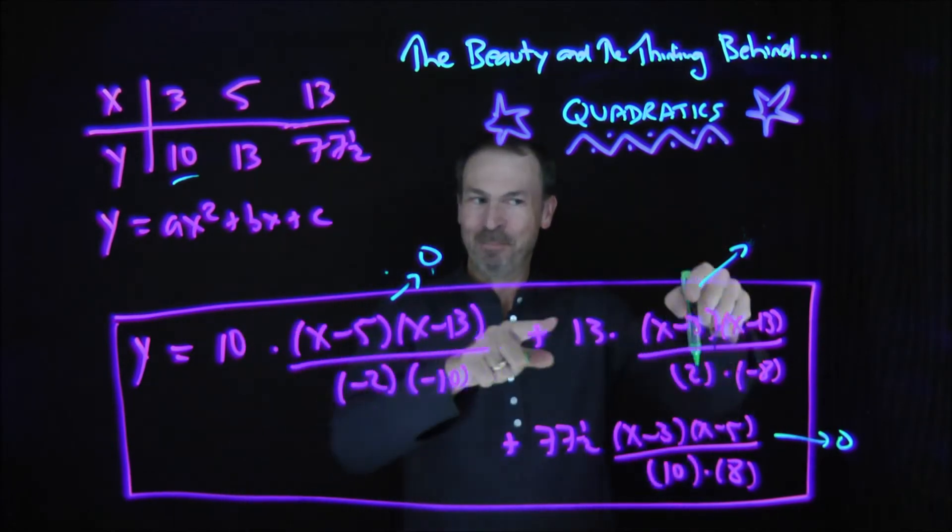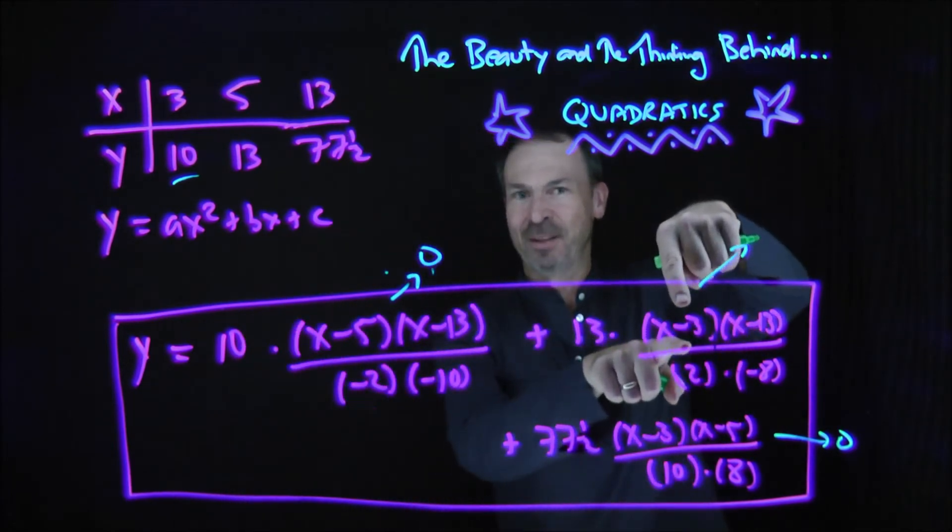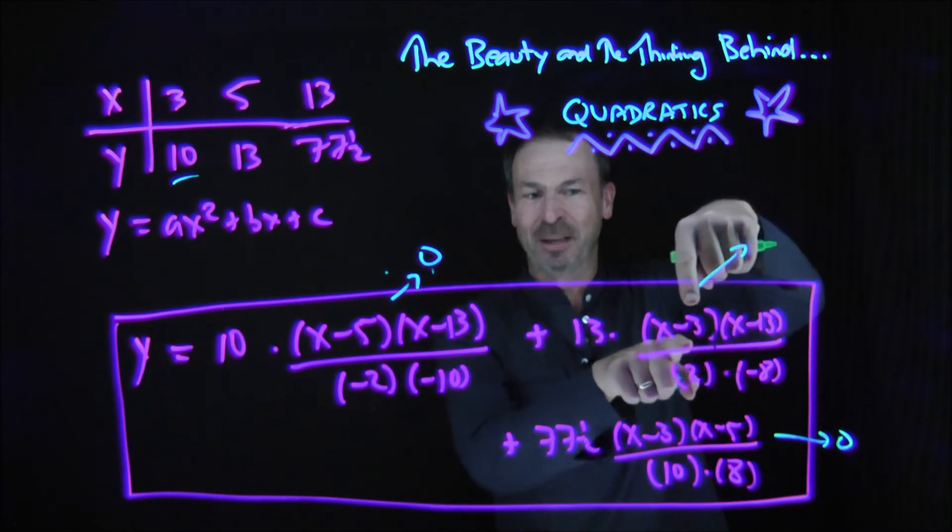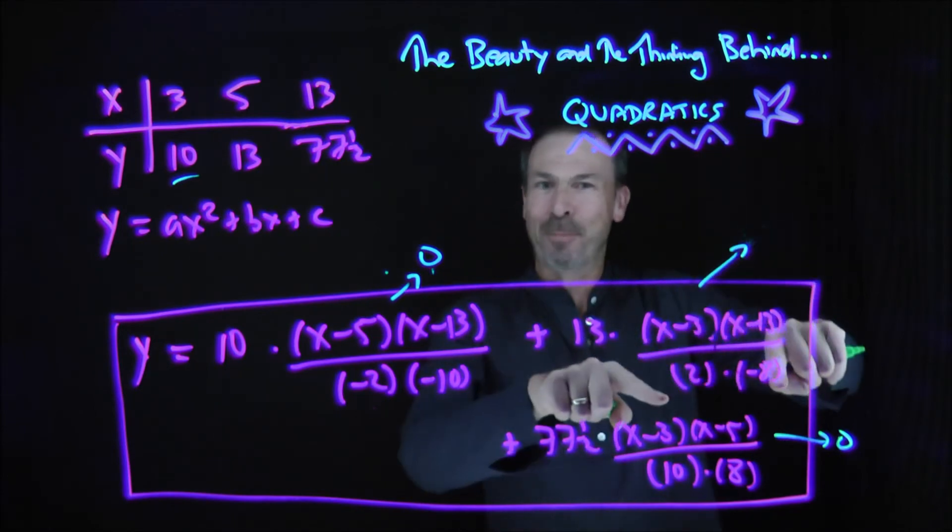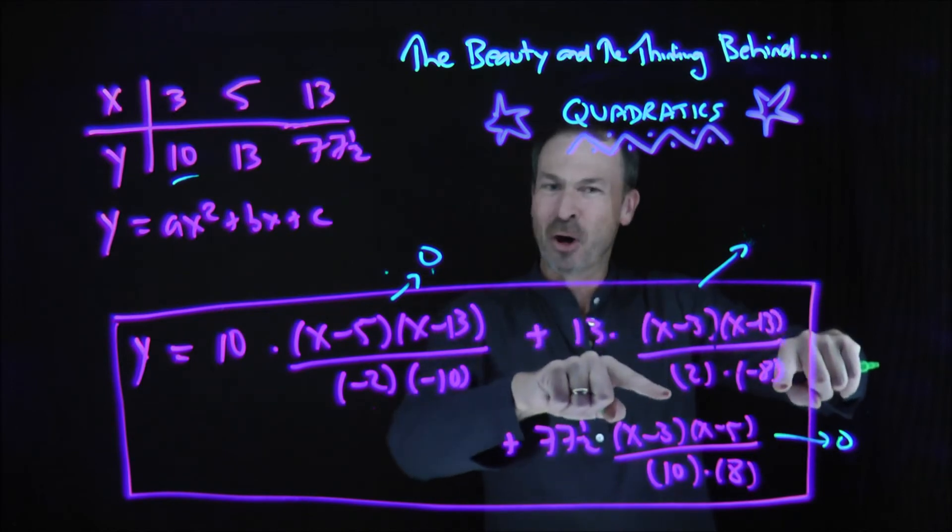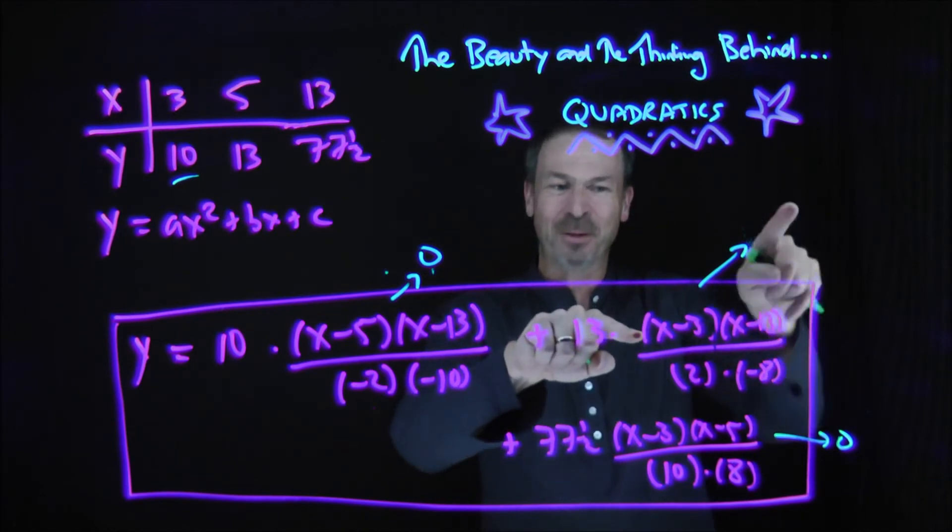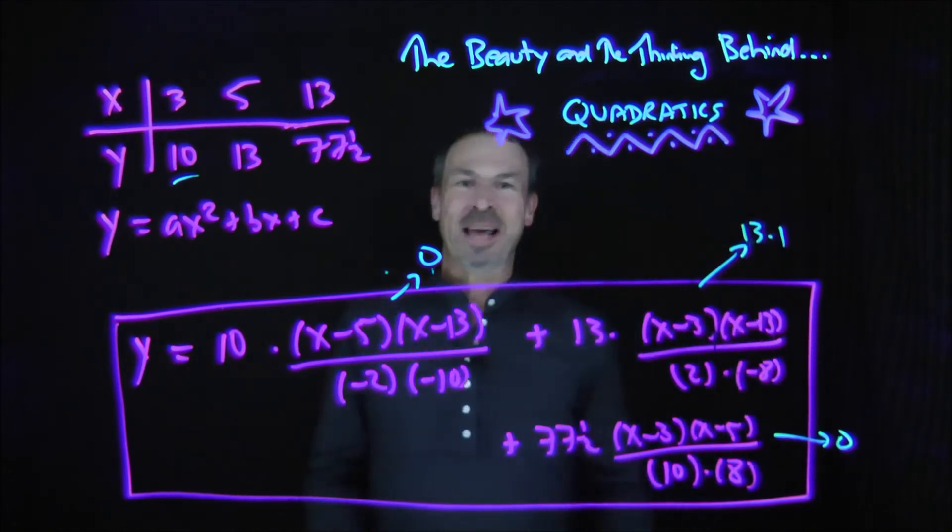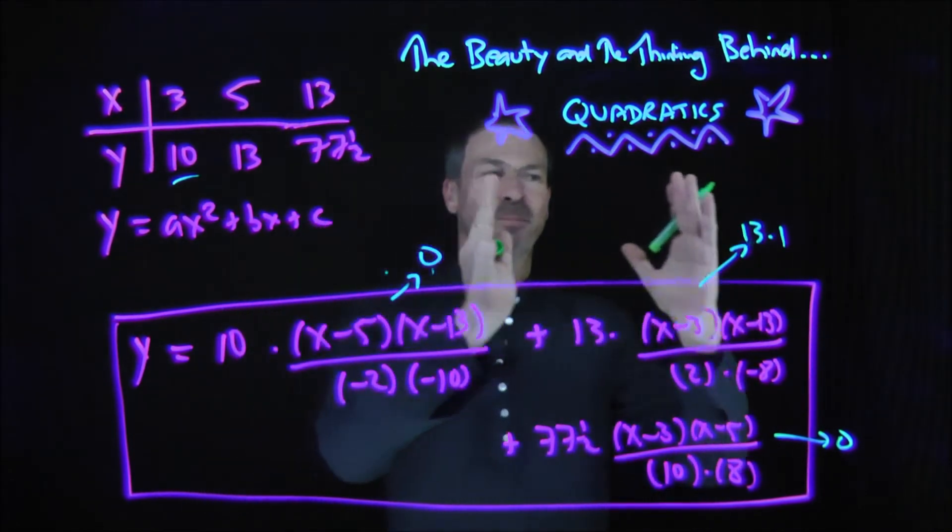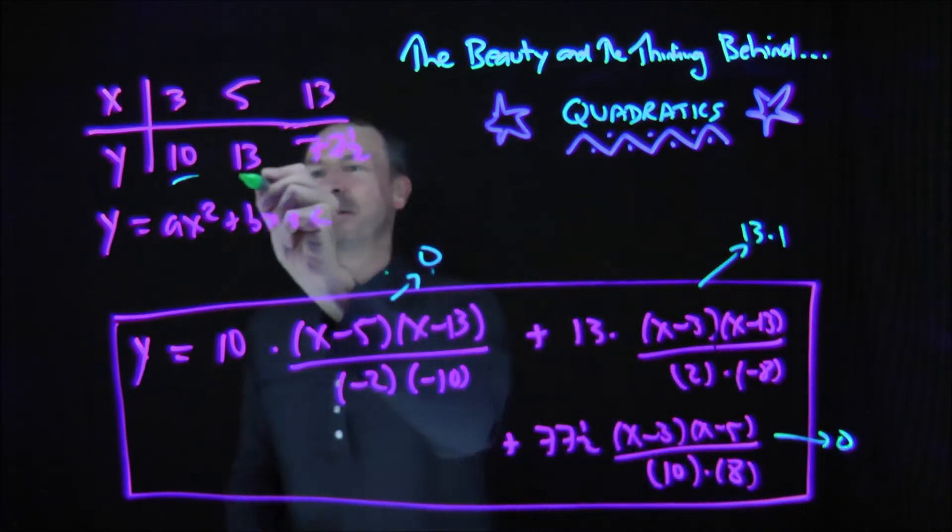And look what I did. I'll have 5 minus 3 on the top times 5 minus 13 on the top. So I'll get, what, a 2 and a negative 8 on the top. And look what I put on the bottom. I put the perfect bottom to match putting x equals 5 on top. So all that's 1. This becomes 13 times 1. So when x is 5, I get 0 plus 13 plus 0, which is 13.